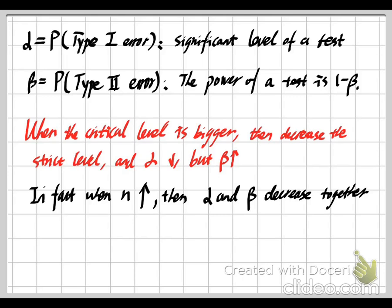Now about the p-value: the p-value is the smallest significance level — in other words, the smallest alpha — that would lead us to reject our null hypothesis for a given data set.